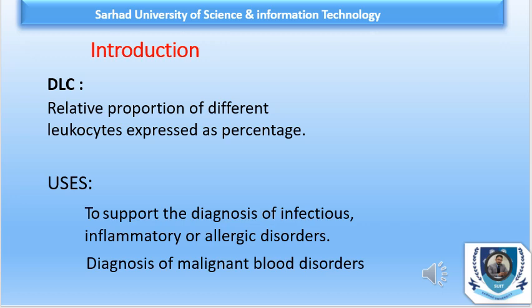A DLC is the relative proportion of different leukocytes expressed as a percentage. The differential leukocyte count consists of identifying and counting the first hundred white blood cells encountered. This gives the percentage of each cell type present. For example, if 25 of the hundred white blood cells were lymphocytes, then the percentage of lymphocytes is 25%.